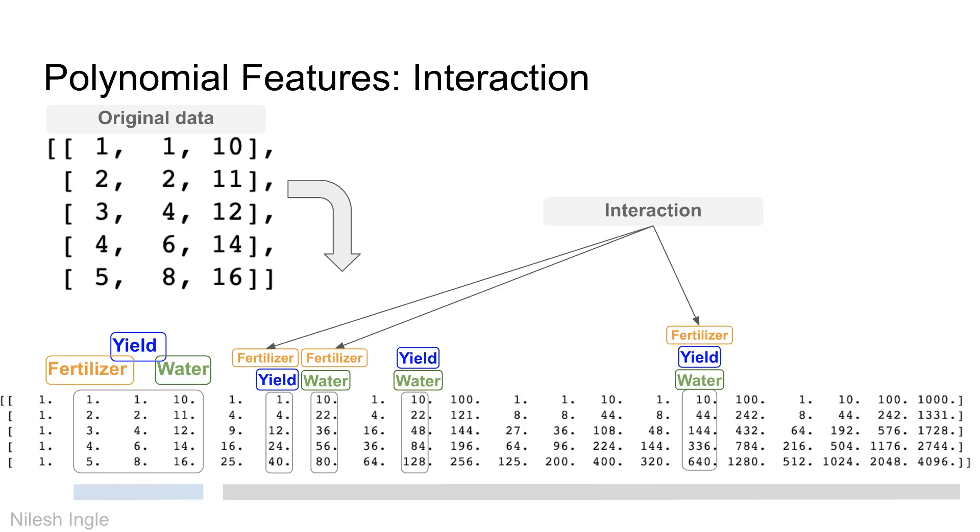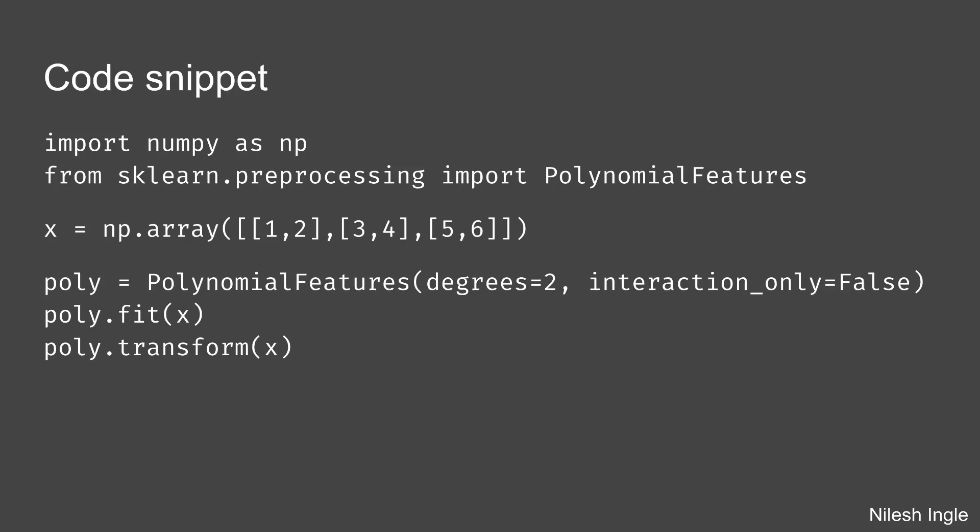Here is the code snippet. It is pretty straightforward and standard as we have seen before. We'll be importing the library preprocessing and from that we'll use the polynomial features. First we initialize the variable poly using PolynomialFeatures degree=2, interaction_only=False.